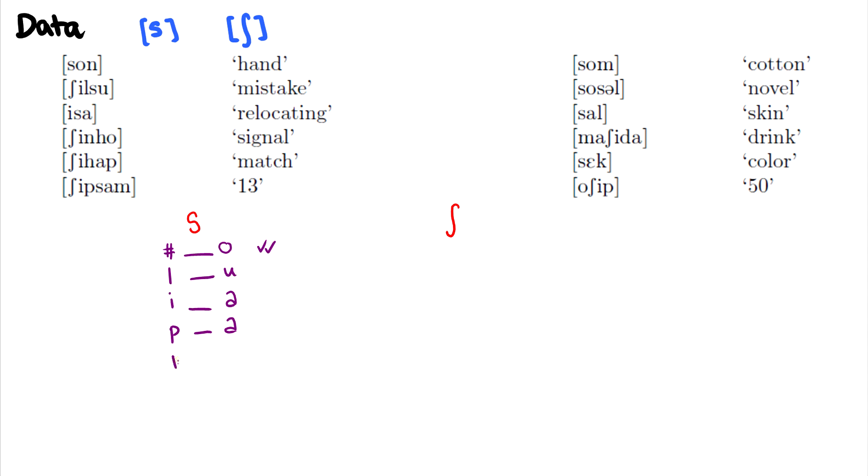In sa, it's at the beginning of the word, but there's an a after it. In mashida, there's nothing. In sek, the beginning of the word and an e is after. And then in o ship, there's nothing. So now we have all the environments for s.